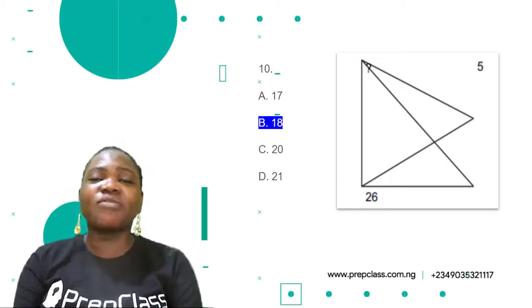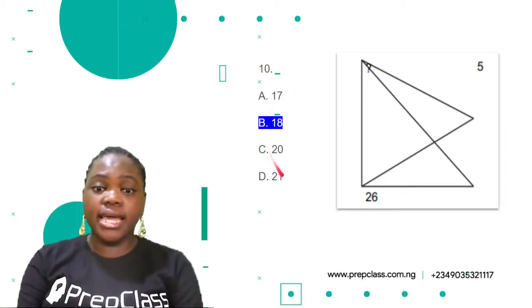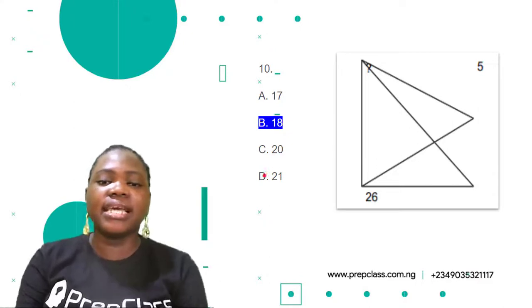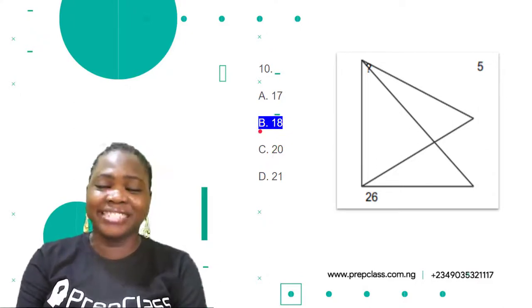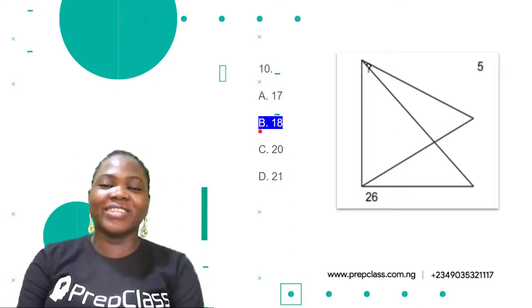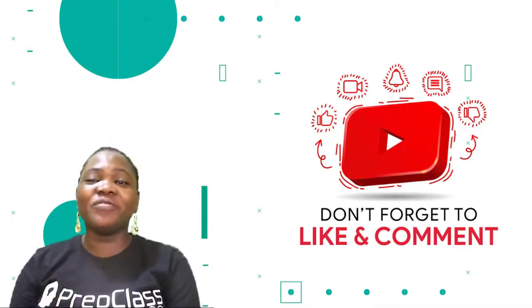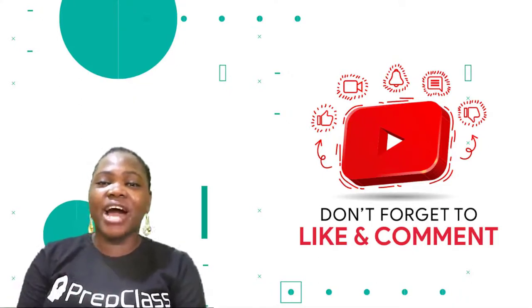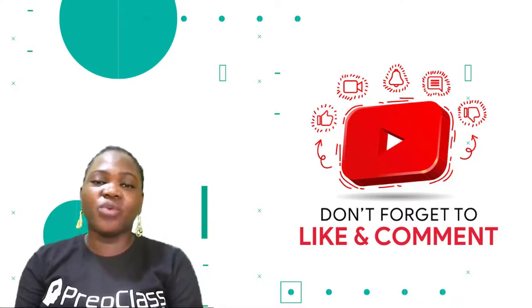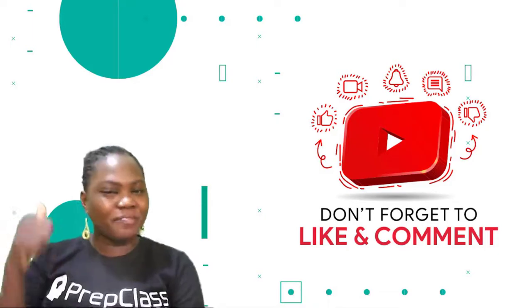Let's find out which option is correct. Option A isn't correct, C is not correct, so the correct option is B, which is 18. Please don't forget to like and comment on our videos, subscribe to our channel. You can also join us on WhatsApp by clicking the link in the description below. Till I come your way next time — bye for now!